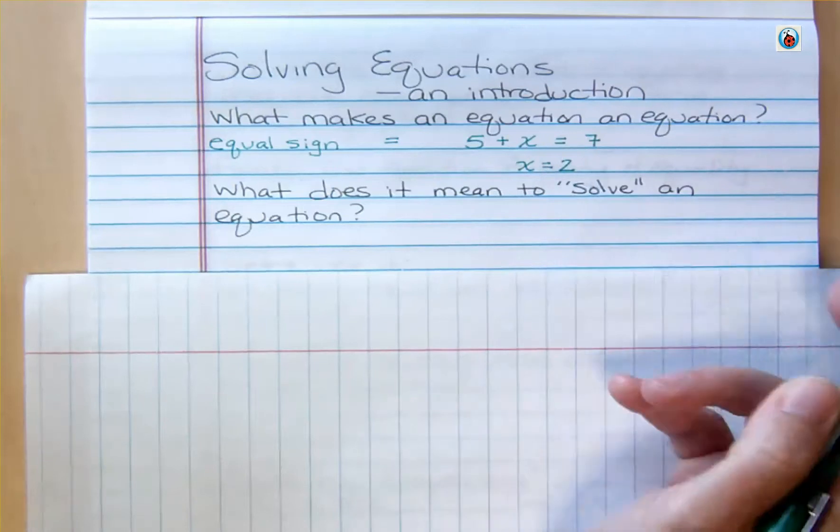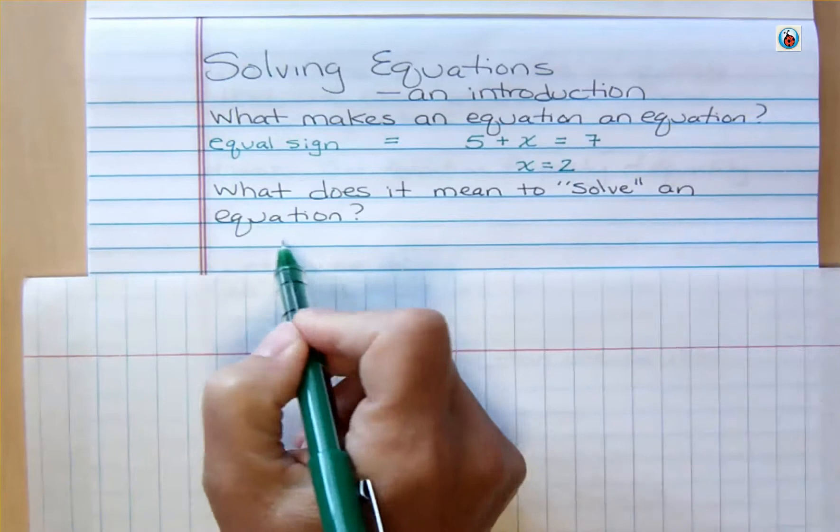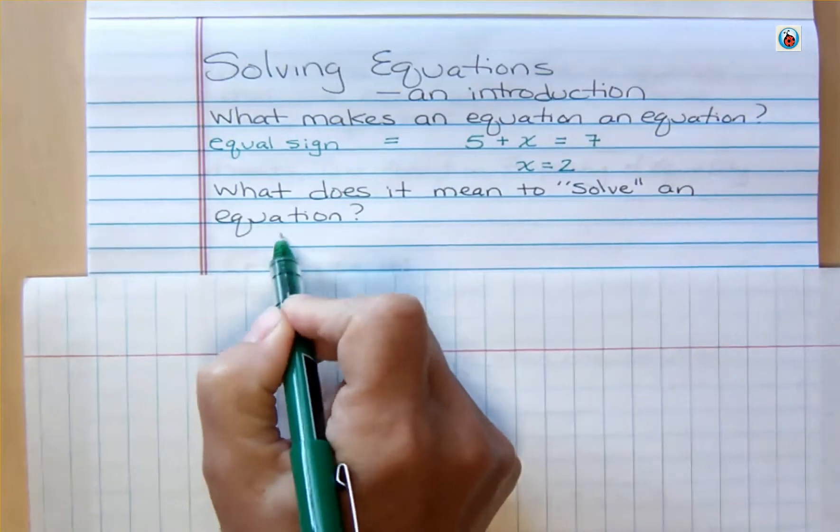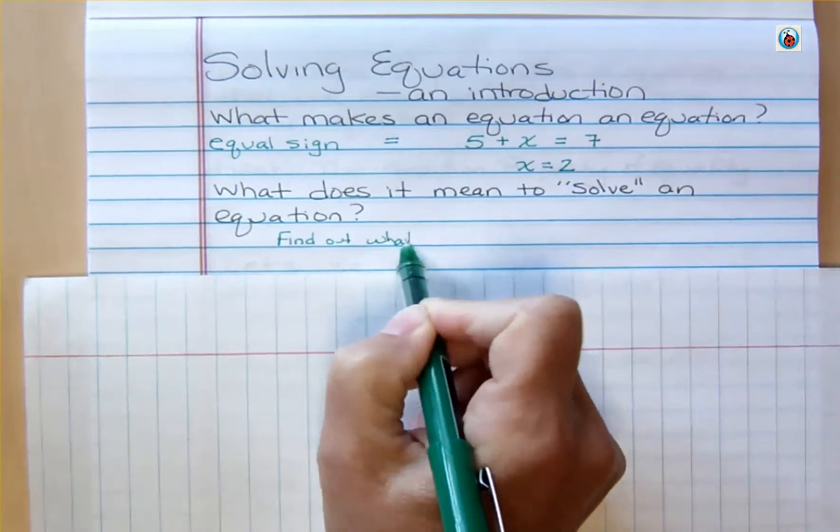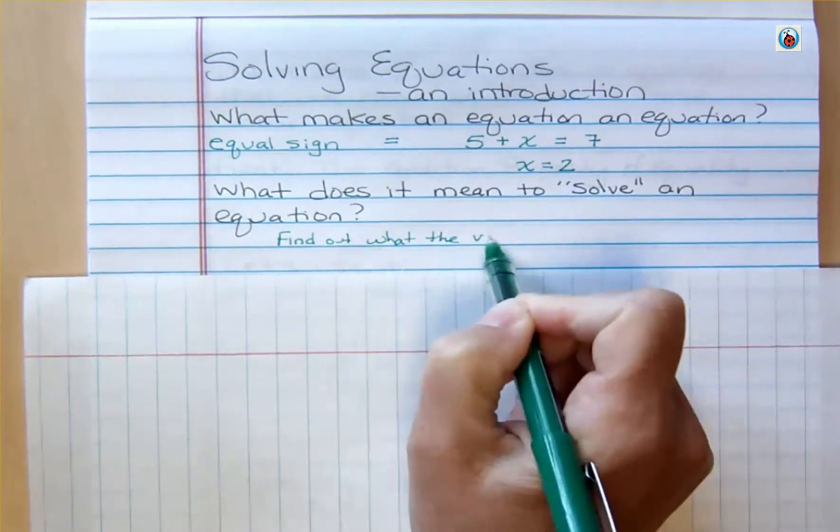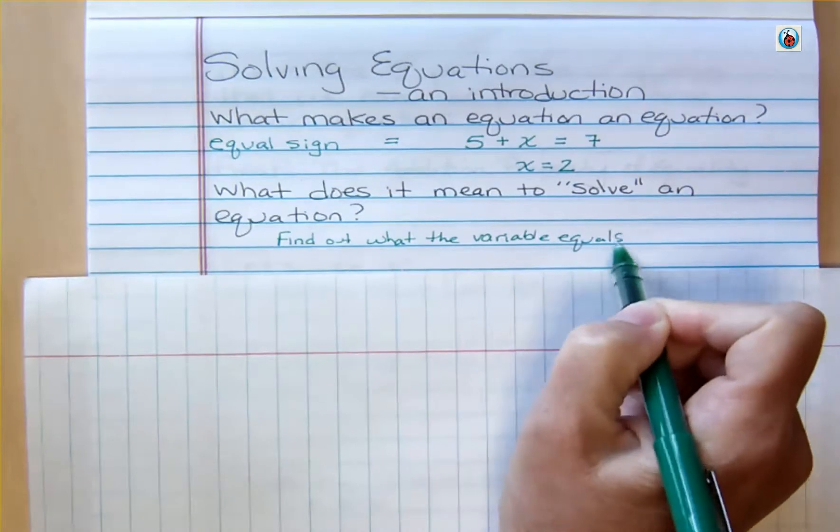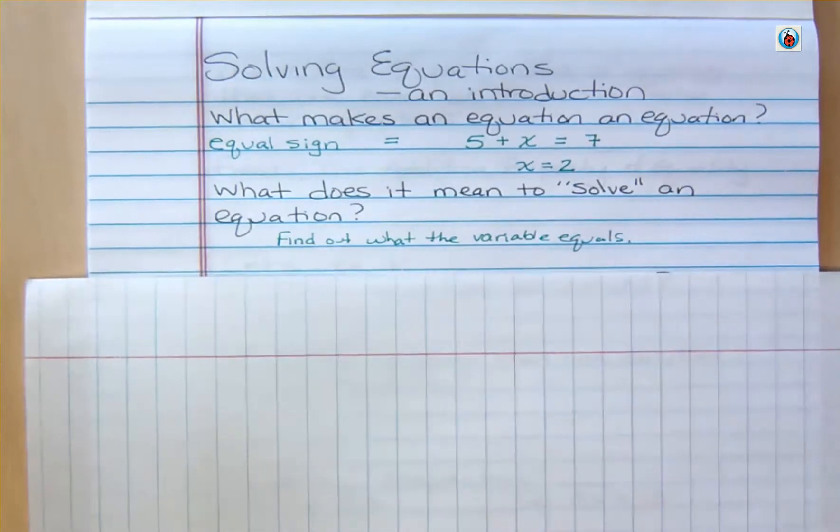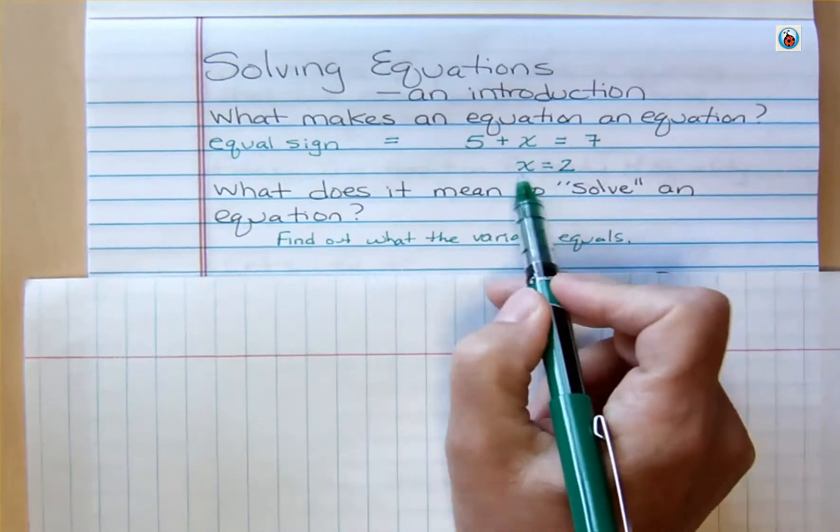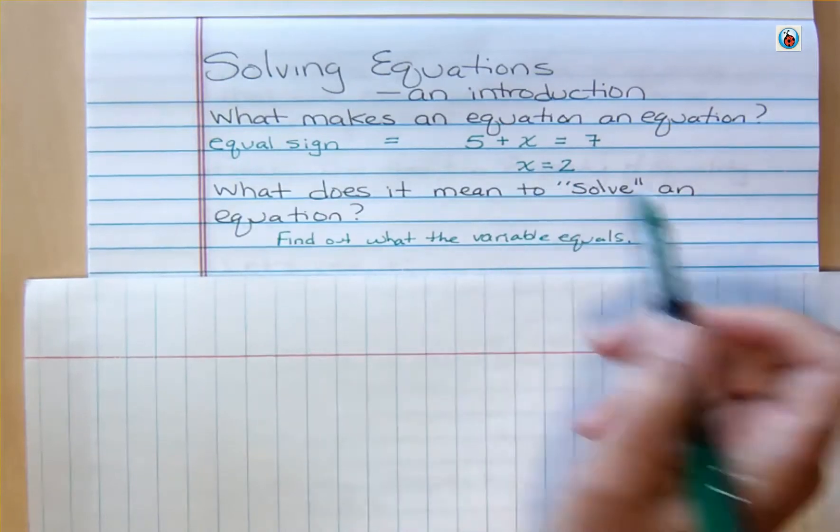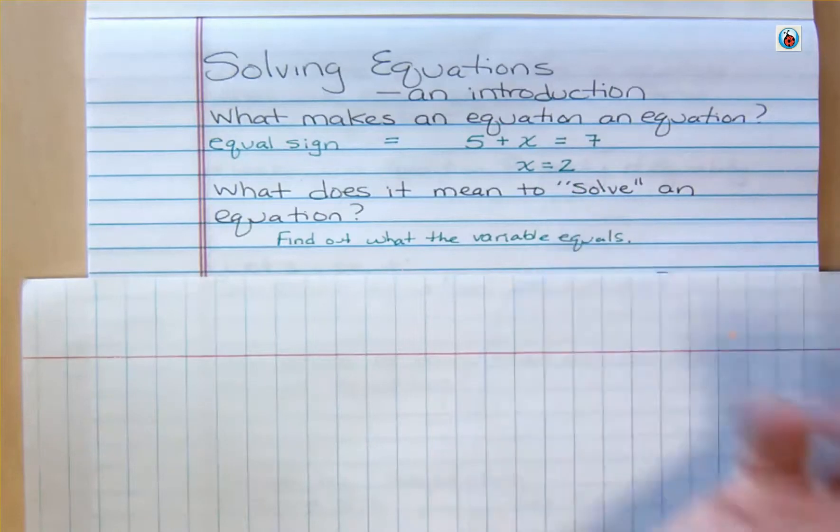Later, I could have the same variable that equals something else in a new problem. So to solve an equation means find out what the variable equals. And that's really what it means to solve. And when you solve an equation, your answer should look like this. Your variable equals something. It can be an expression more complicated than just a number. But for our purposes, mostly it's just a number over there.